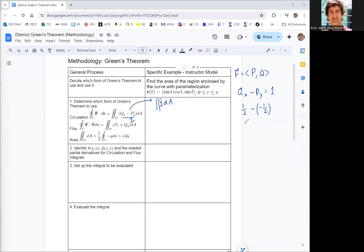Then you can integrate backwards to figure out that if the partial derivative of p with respect to y is negative one half, then it must be negative y over two, or negative one half y.